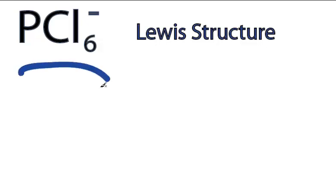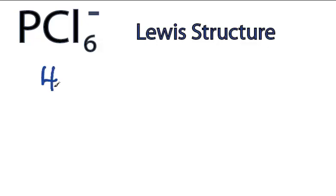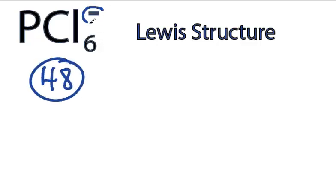This is the PCl6 minus Lewis structure. For PCl6 minus, we have 48 total valence electrons. Remember that includes this up here — this is an additional valence electron from the negative charge.